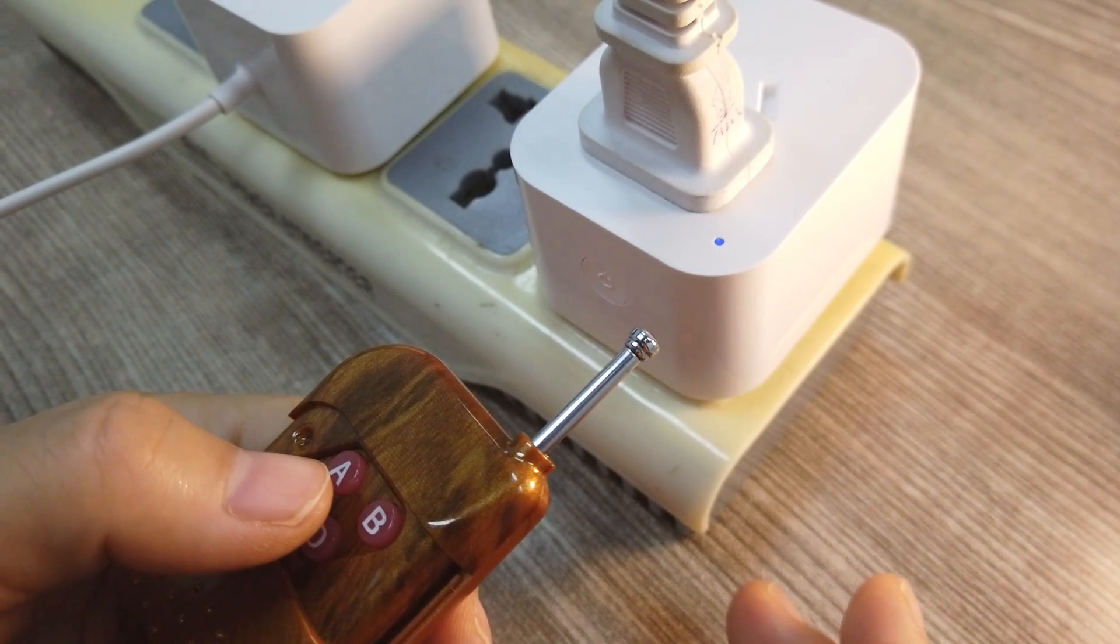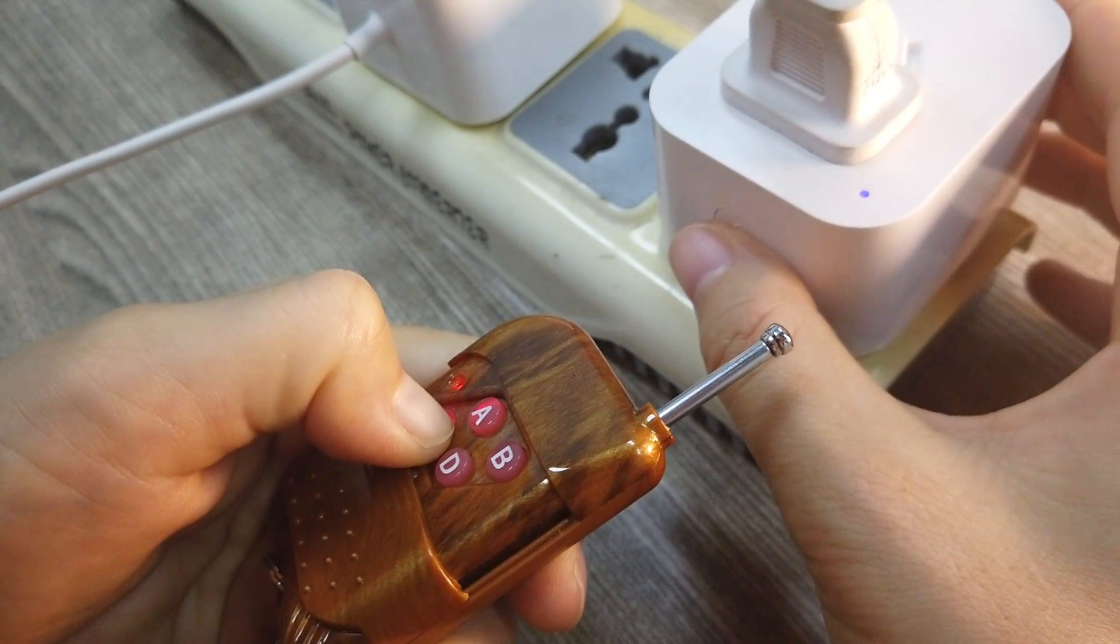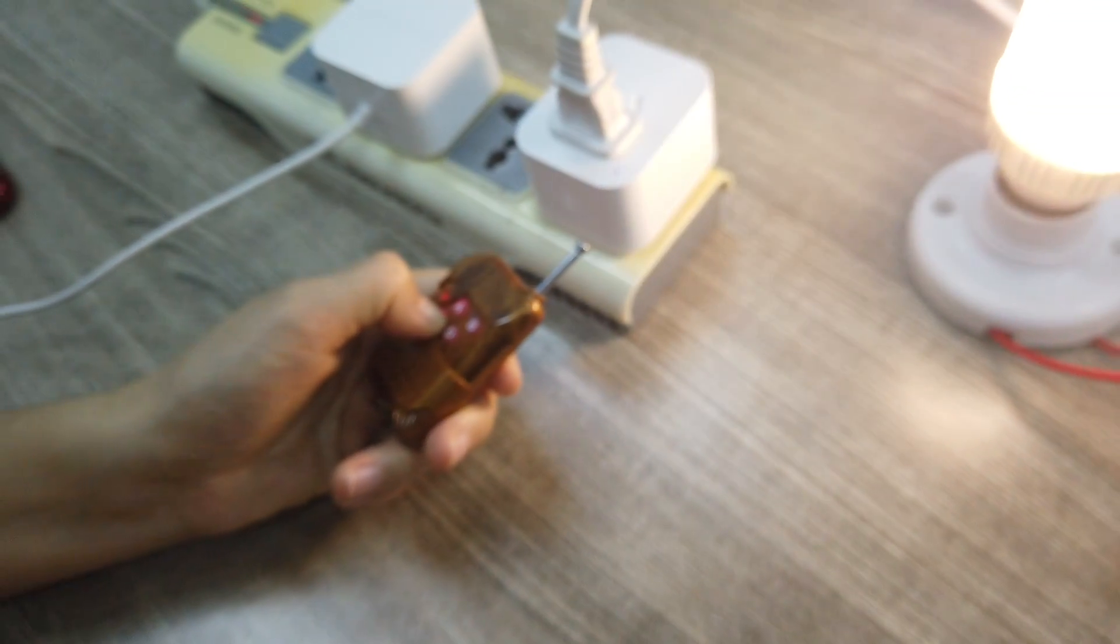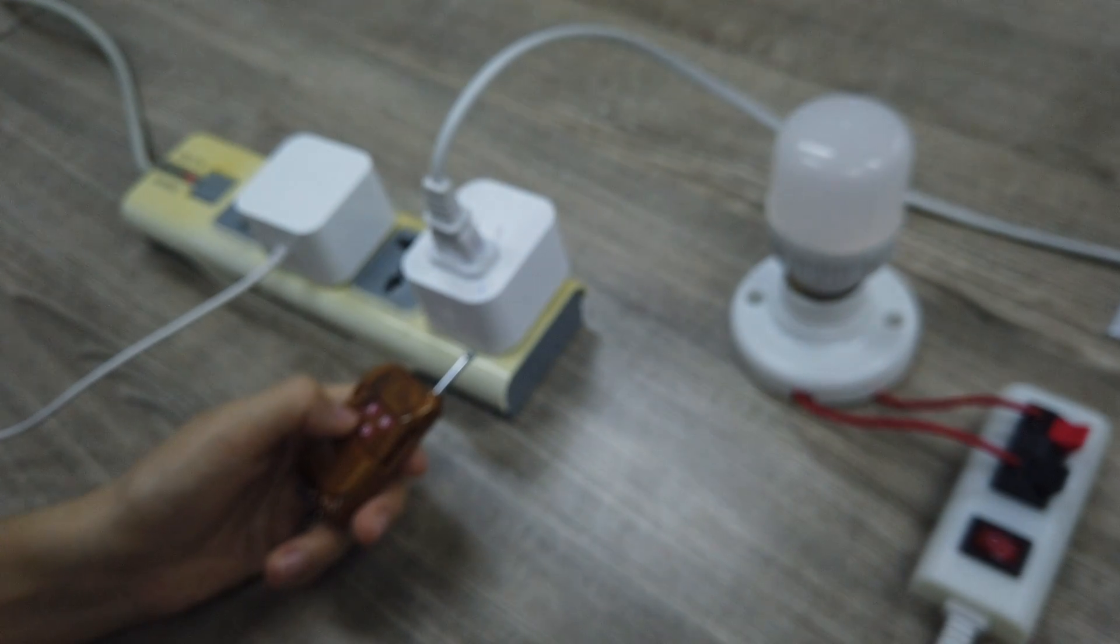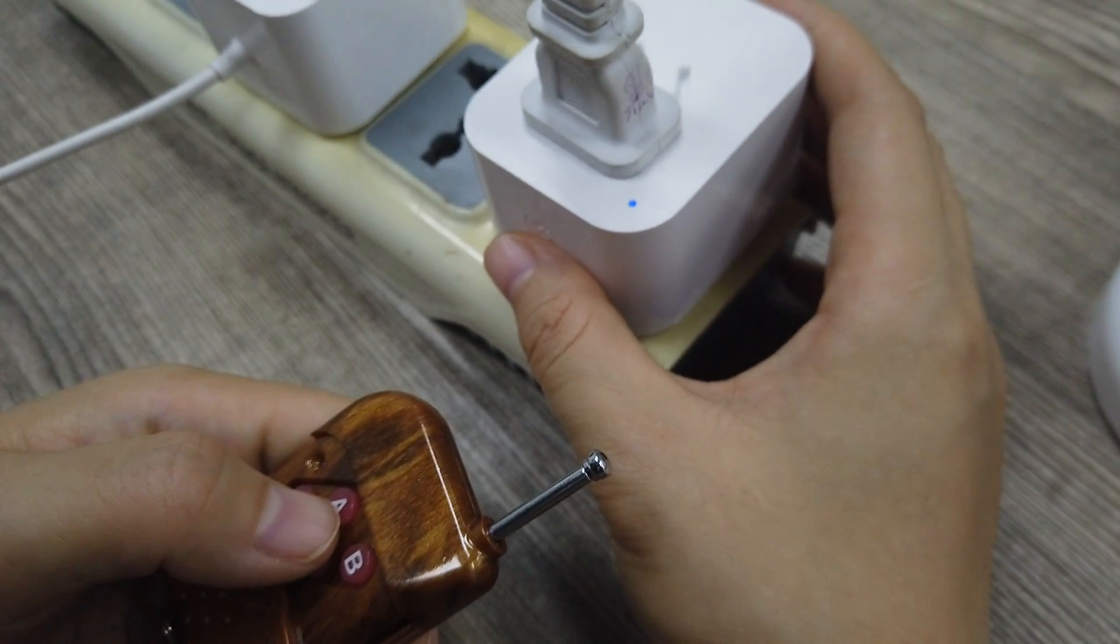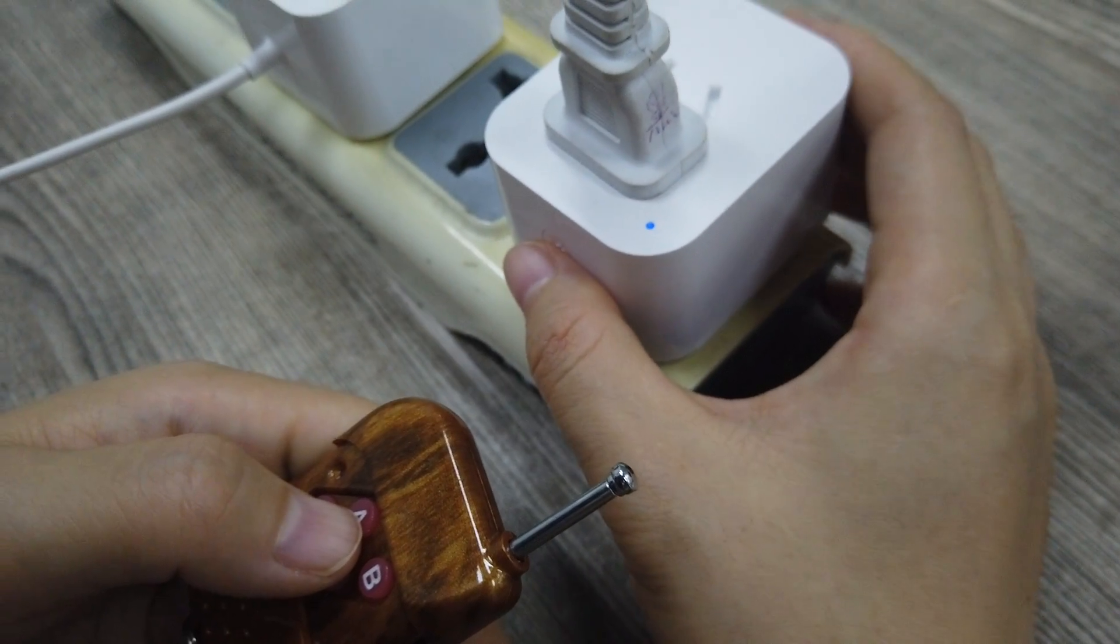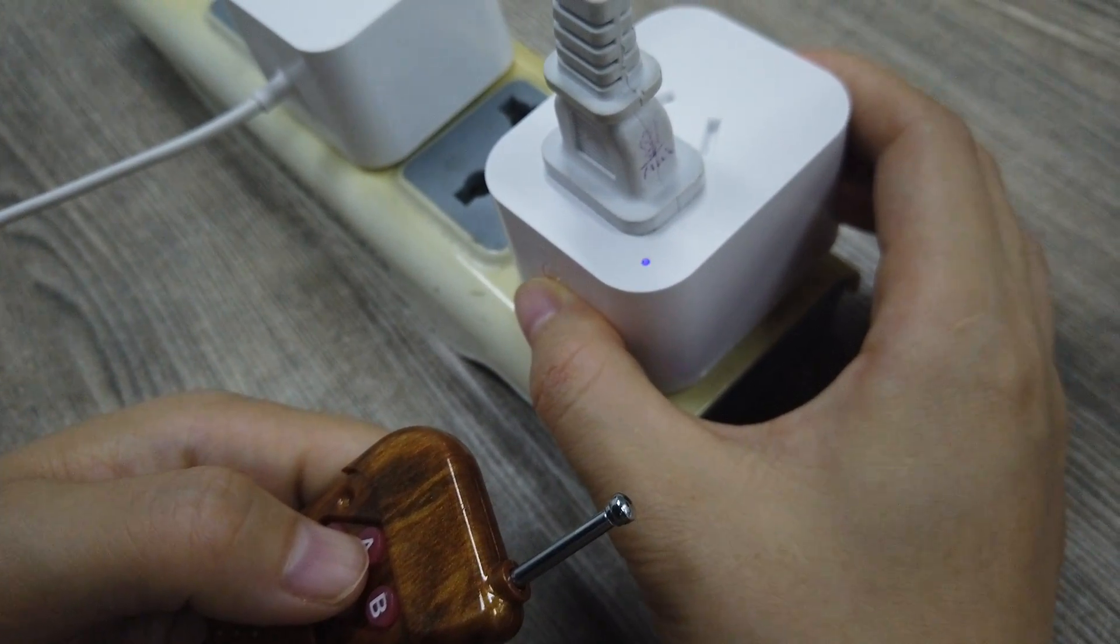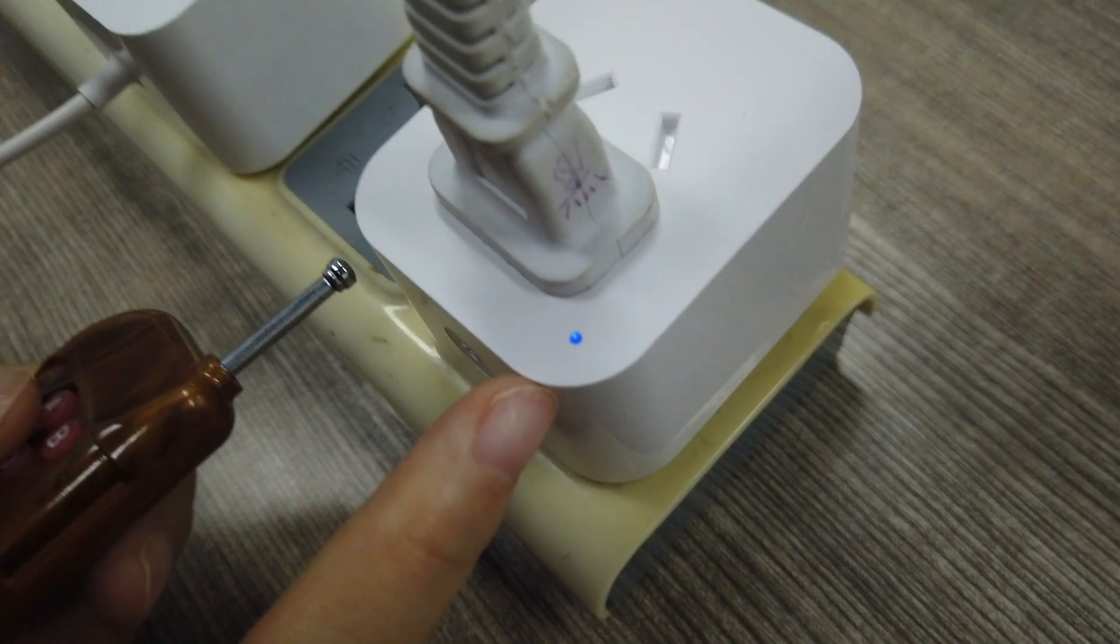For the job function, if we want to reset the smart socket, we should press the button eight times. We can see the light is flashing.